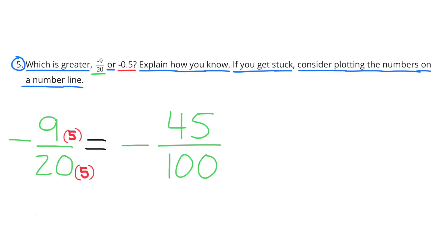I can compare negative 9 twentieths to 5 tenths pretty easily, because I noticed that I can multiply the 20 times 5 to get 100, and I multiply 9 times 5 to get 45. So now I have negative 45 hundredths.